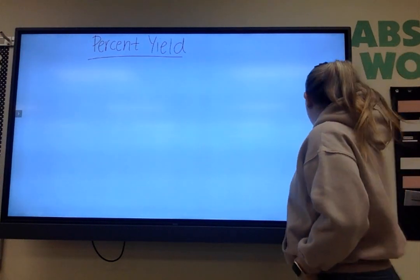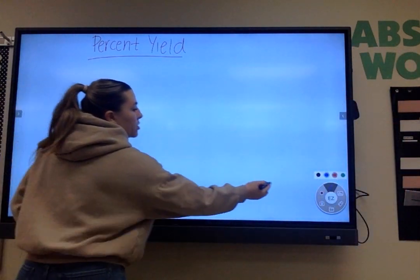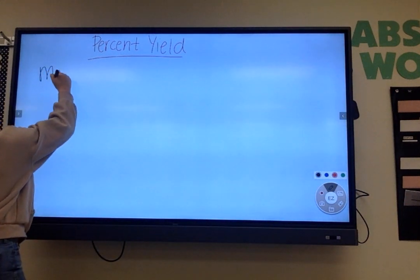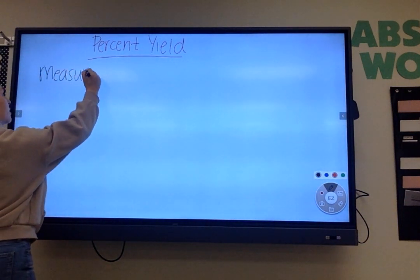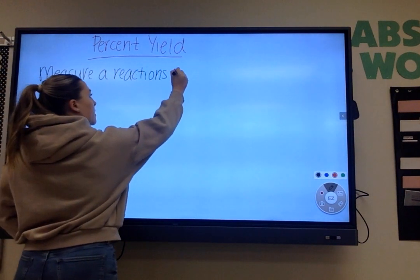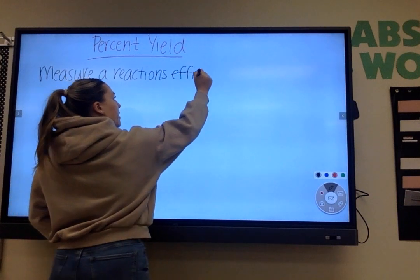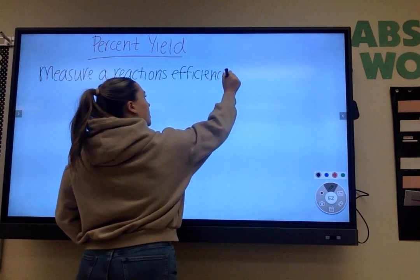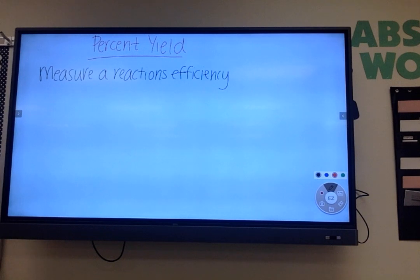So I want you to write down that percent yield measures a reaction's efficiency. So essentially we're seeing if the products that produce is actually what was expected to be produced or not. Okay, you're going to have your actual value that was produced and then the theoretical value, what you thought was supposed to be produced in the reaction.